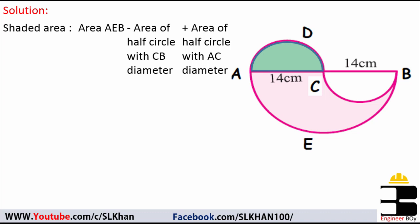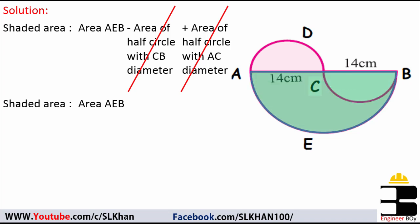So these two terms cancel each other out, because one is minus and one is plus. This leaves us with only the area of AEB, which is a half circle having diameter equal to 28, or radius equal to 14 centimeters.